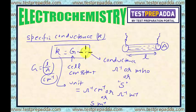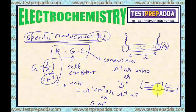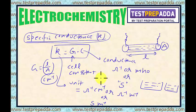Now, dear students, to compare the conductance of two electrolytic solutions, specific conductance is not a suitable quantity. Different electrolytic solutions may have different concentrations, so the number of ions will differ, and consequently the conductance will change. It is necessary to define physically more meaningful quantities to compare conductances, and these are molar conductance and equivalent conductance.